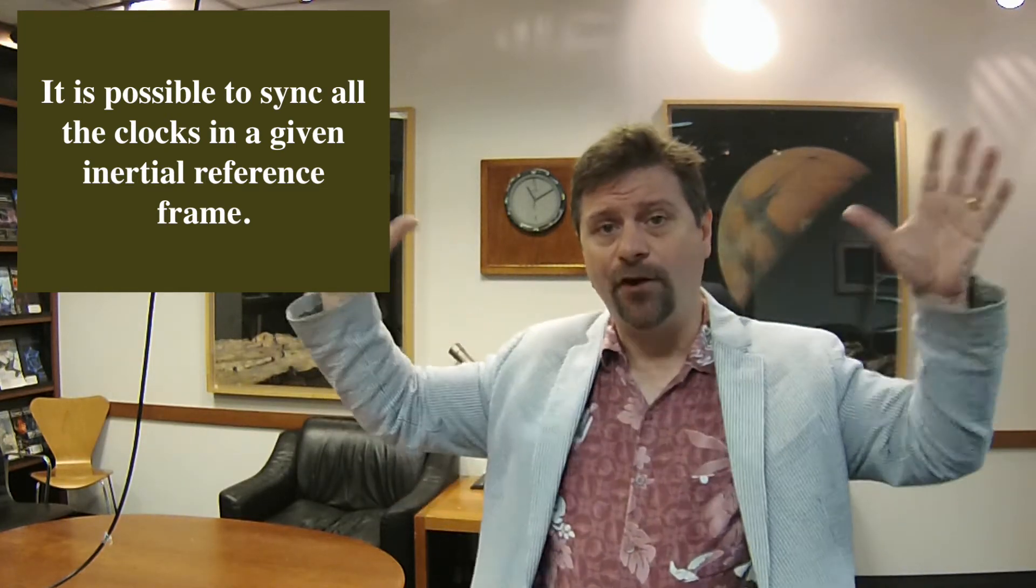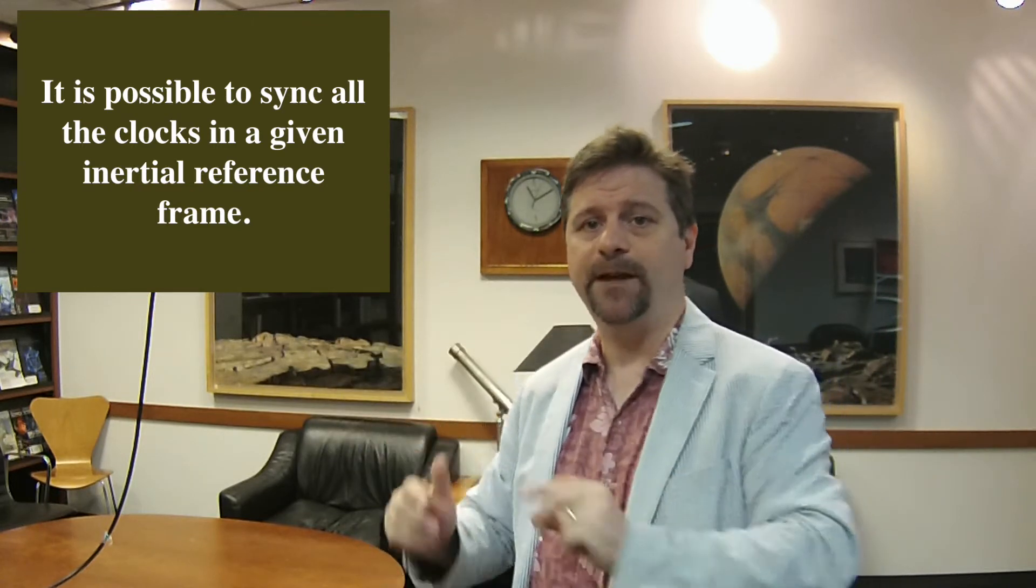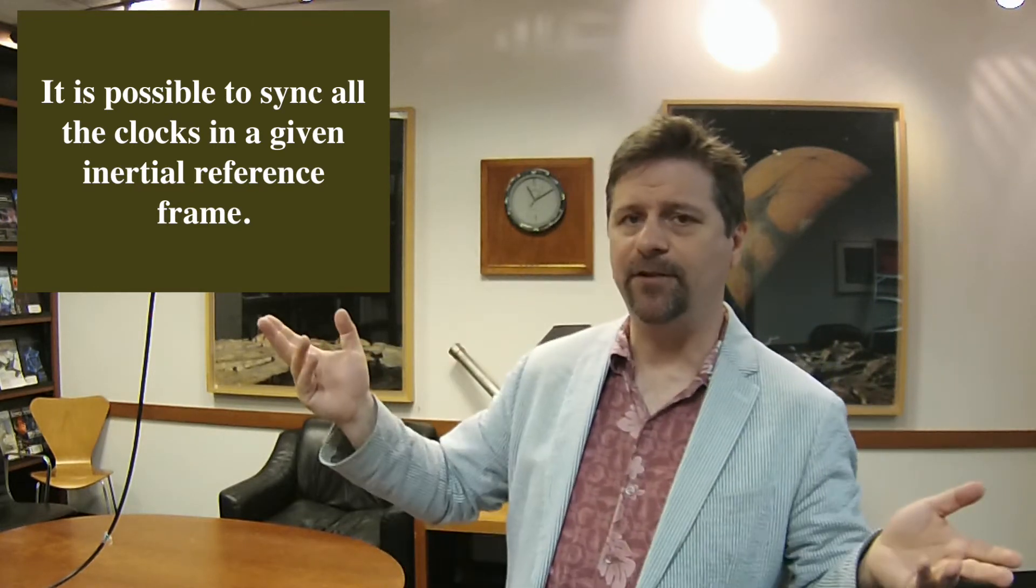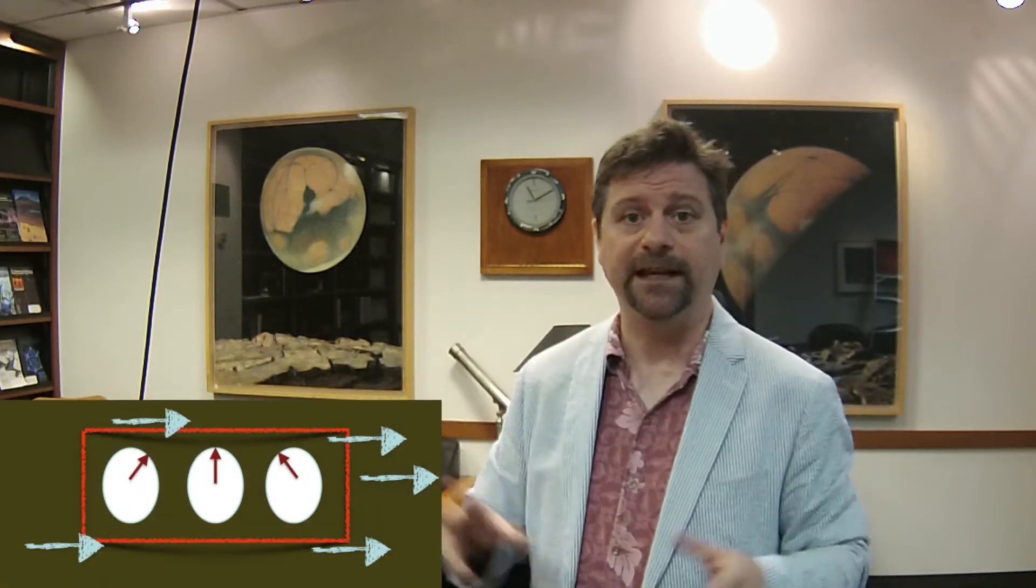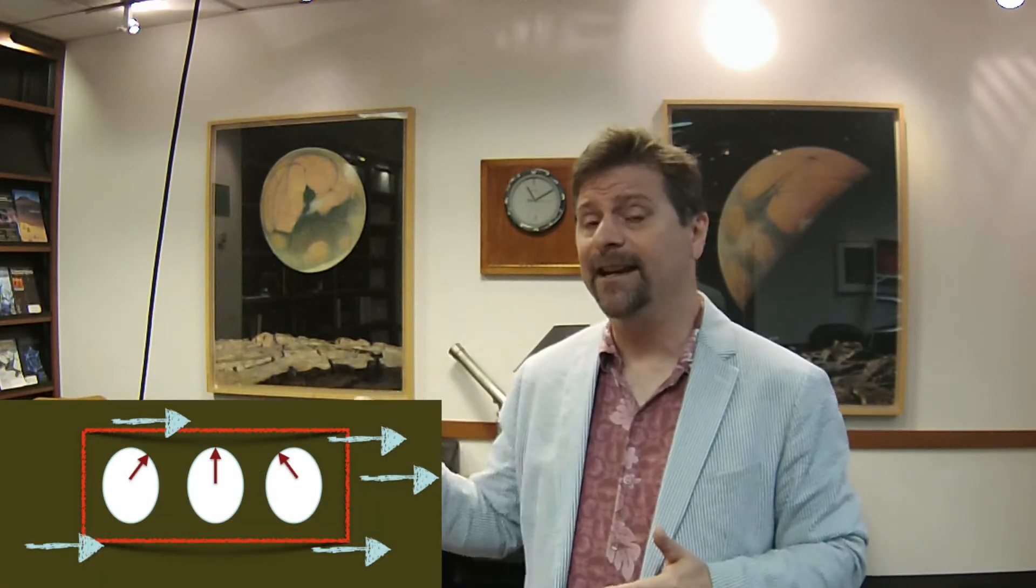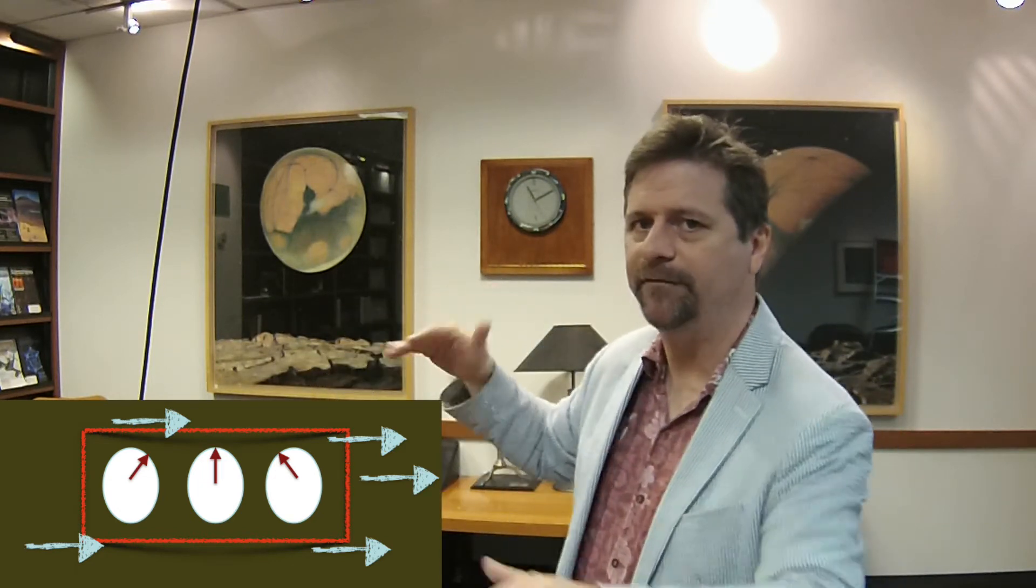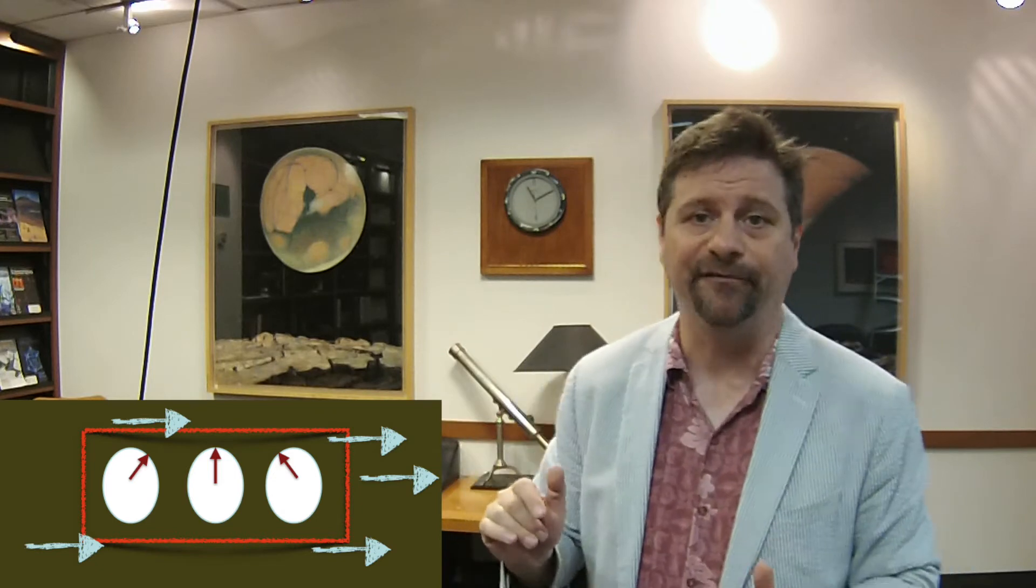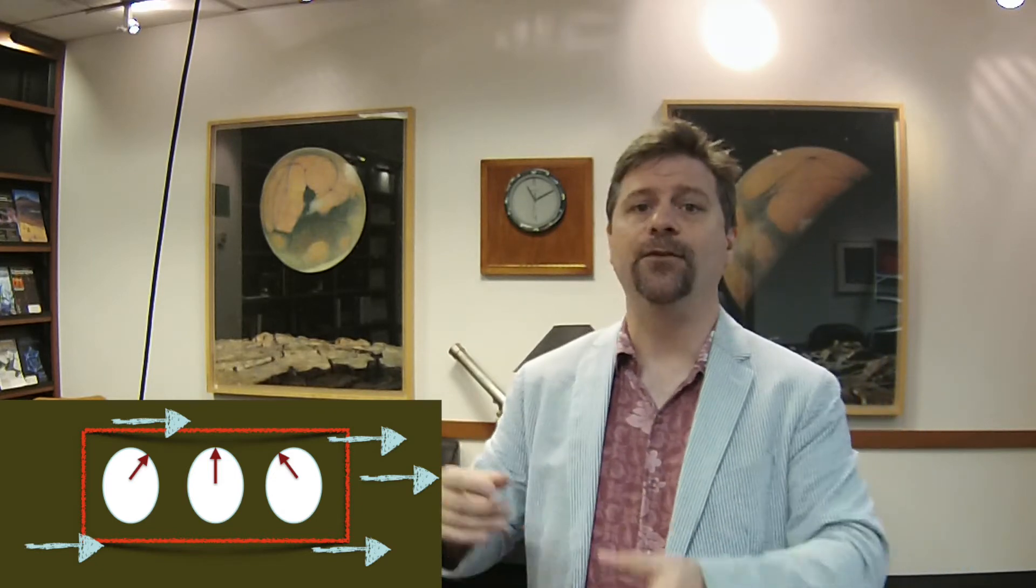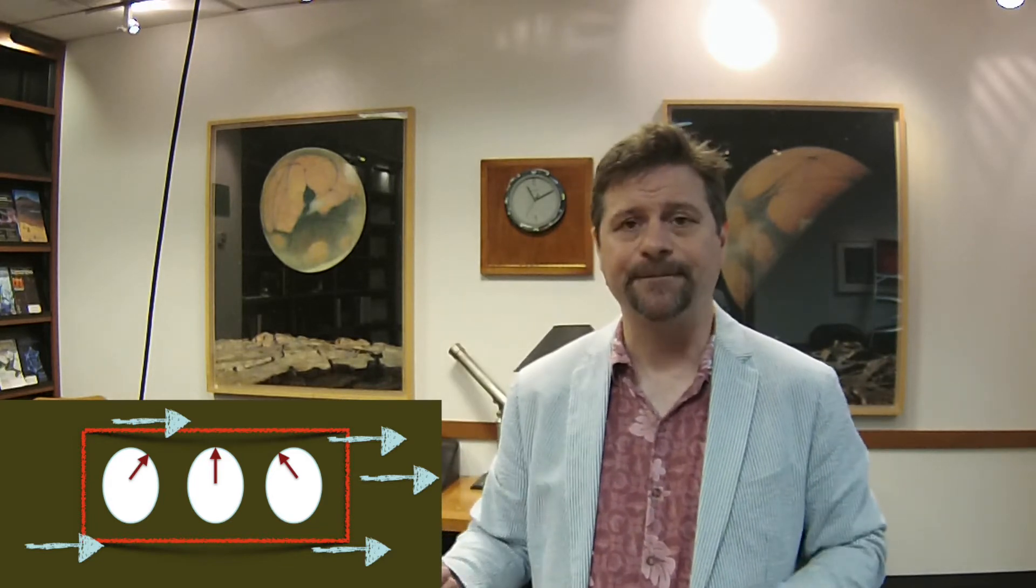As long as we have all those clocks the same in this room, now we take this room and speed it really fast, maybe half the speed of light. As I'm zooming by people, they see that the clocks in the front are moving a little bit slower behind the clocks in the back of the room. The time they read is different. To an outside observer, the clocks in this room are not in sync.